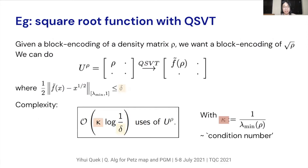As an example, let's consider implementing a square root function. Suppose we have a block encoding of a density matrix rho and we would like instead a block encoding of the square root of rho. Suppose we have found a polynomial approximation f-tilde of the function x to the one-half, where f-tilde(x) only needs to be a good approximation on the interval [lambda_min, 1] with error at most delta. The complexity of the circuit depends on two parameters: kappa, which is 1 over lambda_min(rho) — loosely the condition number — and delta, the error of the polynomial approximation. Overall, the gate complexity scales as order kappa log(1/delta) uses of U_rho, the original block encoding of the density matrix.